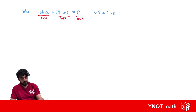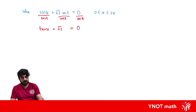One way to handle this is to divide everything by cos x. When we do that, sin x divided by cos x gives us tan x, and cos x divided by cos x is just 1, leaving us with √3. And 0 divided by cos x is just 0. Then we subtract √3 from both sides, giving us tan x = −√3.